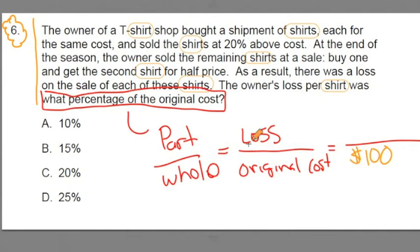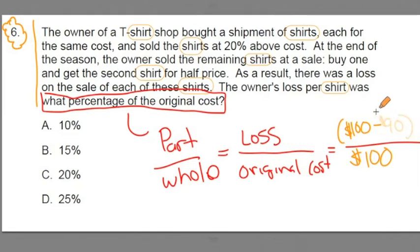And the loss is equal to the original, $100, minus what they sold it for, $90. So that gets you a loss of $10. They're $10 under. So we could rethink this as the part-to-whole relationship: they're losing $10 for every $100 that the owner spent. 10 over 100 is equal to 10%. The answer here is A.